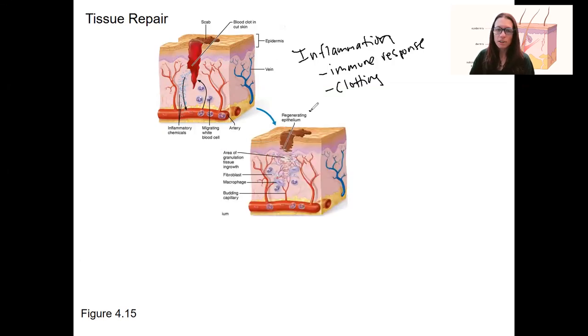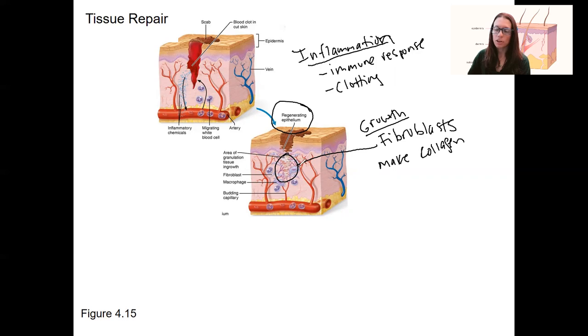Then we've got regenerating epithelium, very similar to what I showed you in that video. We've also got dermal repair here with this granulation tissue. There are fibroblasts here. This step is growth, part of repair. Fibroblasts - what do they do? They make fibers, make protein fibers. In the skin specifically, they make collagen. That's the primary fiber type, especially in that dense irregular connective tissue. That's repairing that tissue down there. Epithelial cells dividing, of course.